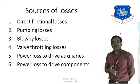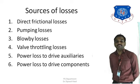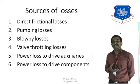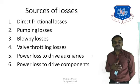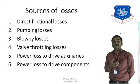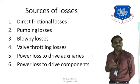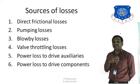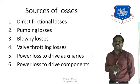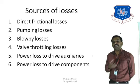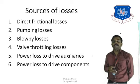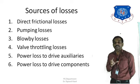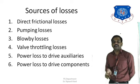The second source of loss is pumping losses — the power required for suction of the fresh charge and to push exhaust gases out. This applies especially to four-stroke engines. It is minor compared to direct frictional losses but still consumes power. The third source is blow-by losses: a certain amount of gas leaks past the piston into the crankcase. Higher pressure or an older engine increases leakage, so blow-by losses increase.